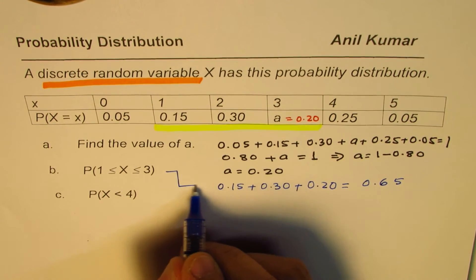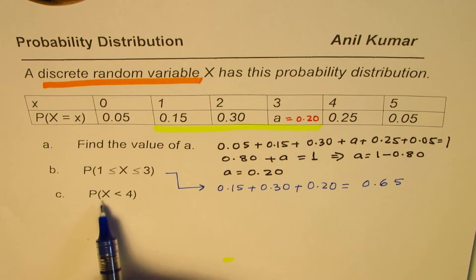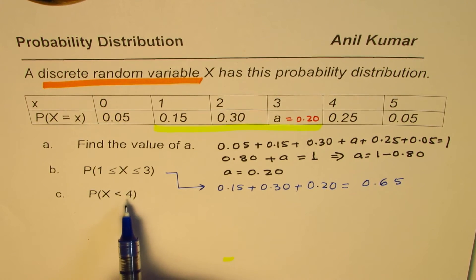That becomes the answer for part B. Now, let's do part C which is probability when X is less than 4.